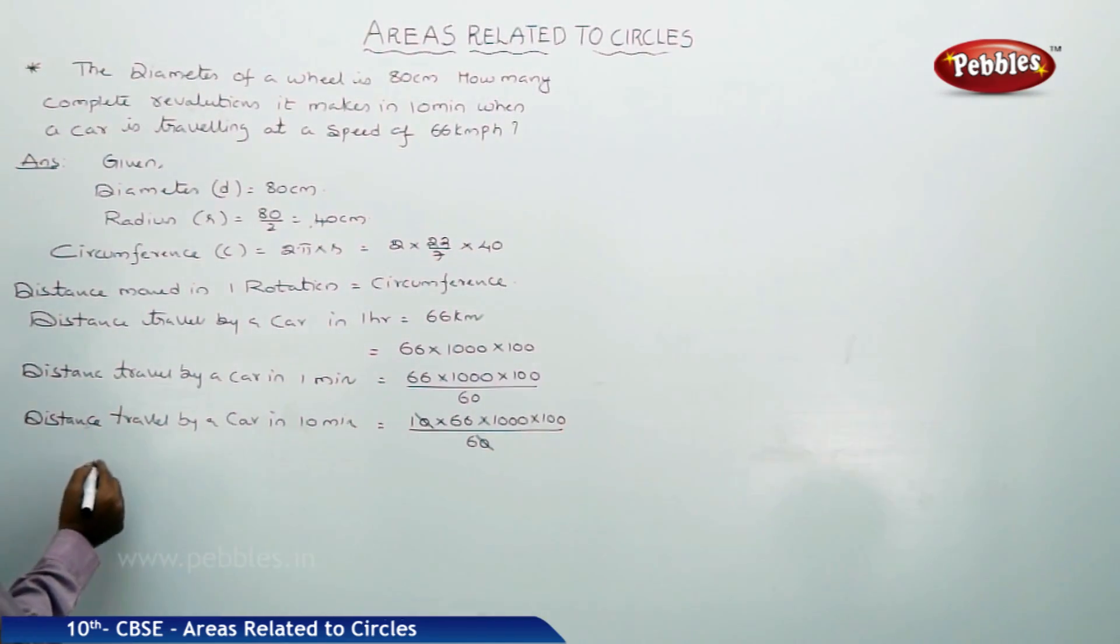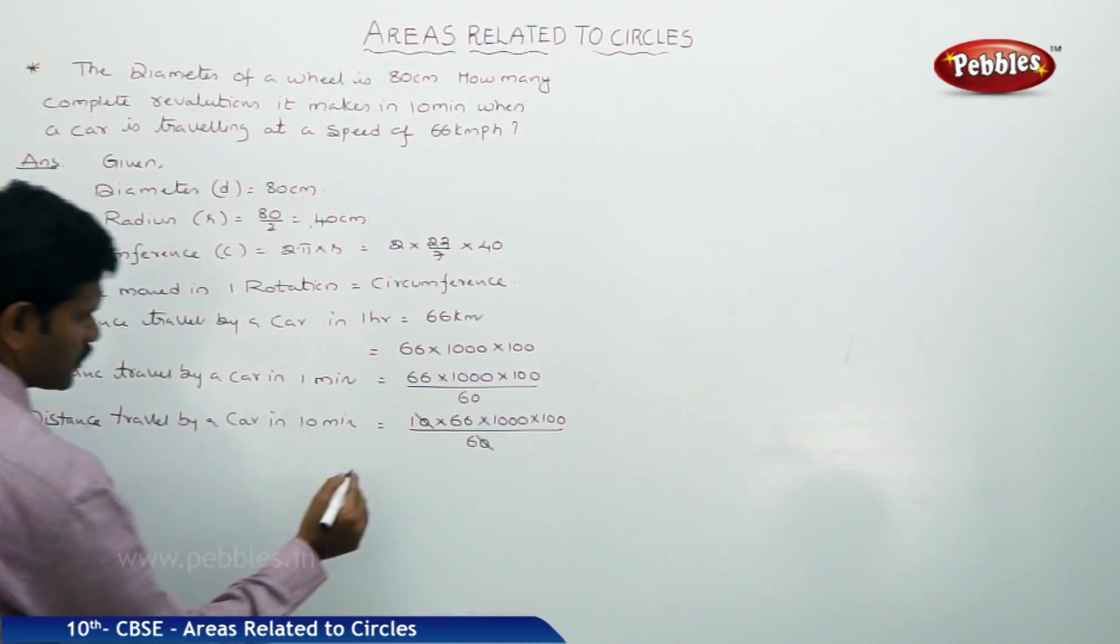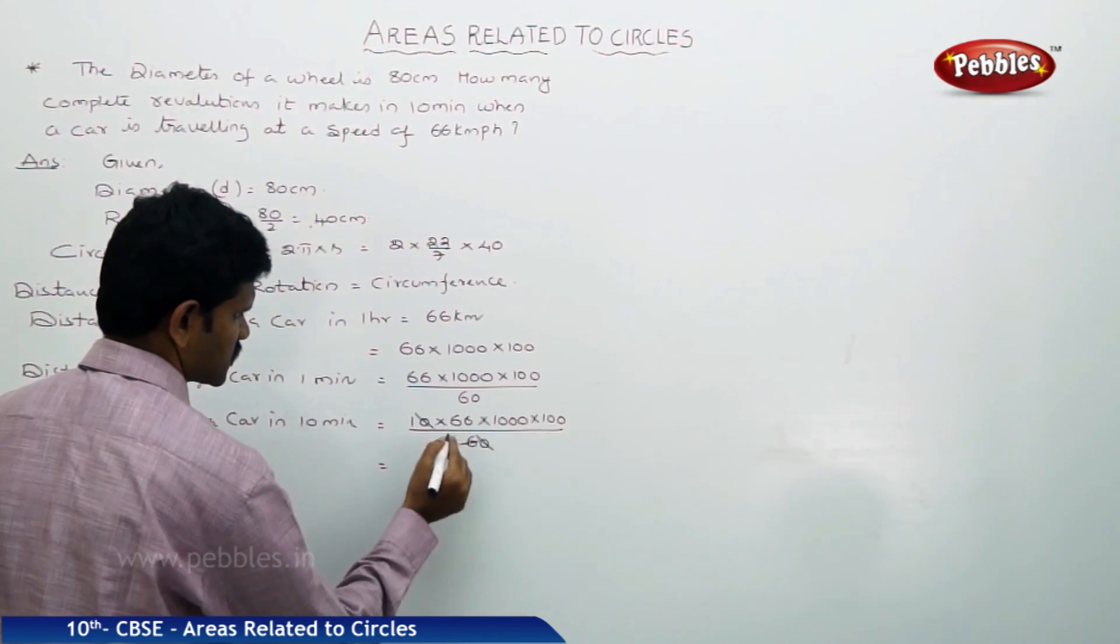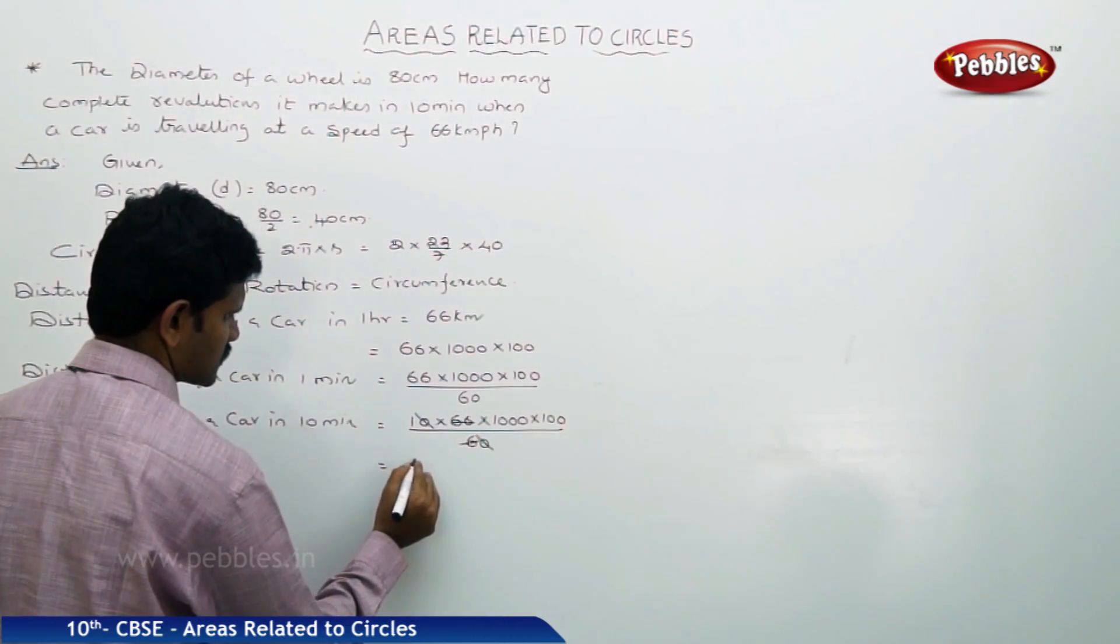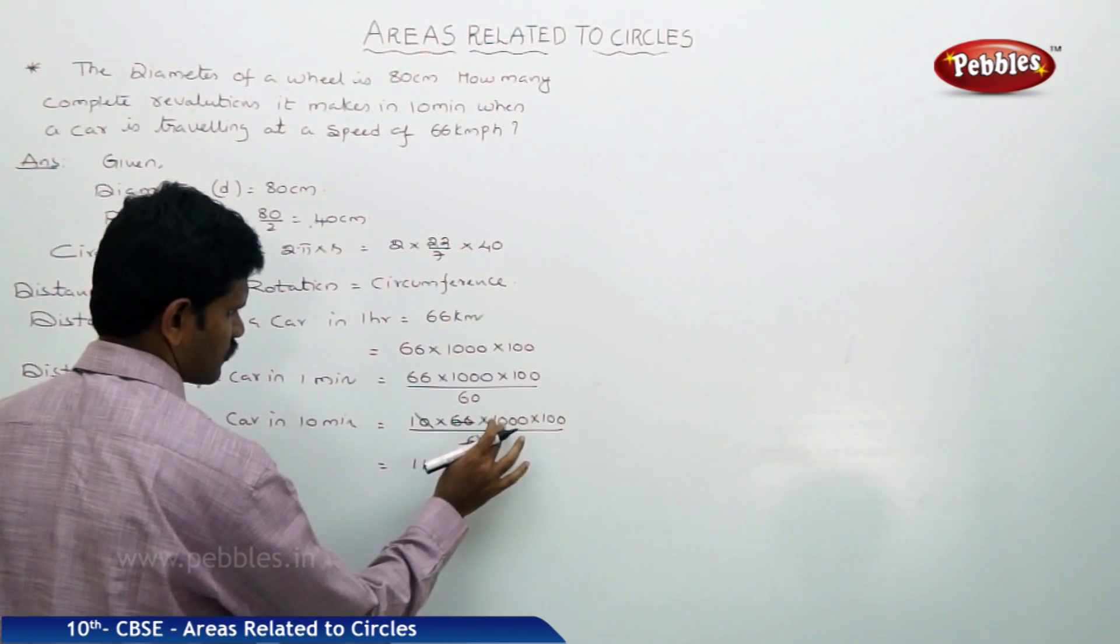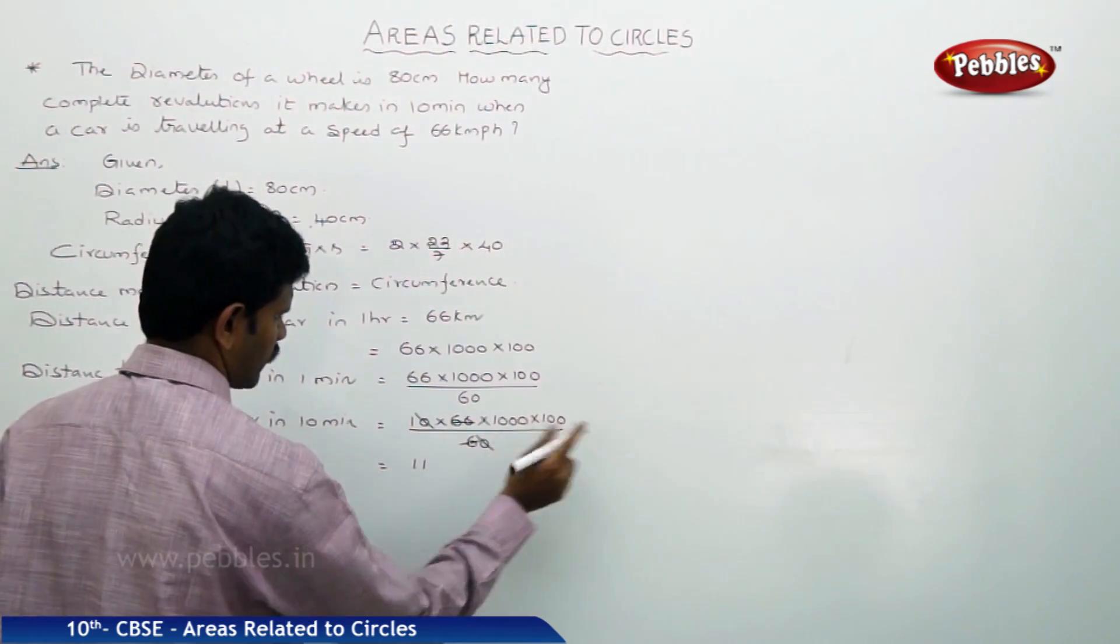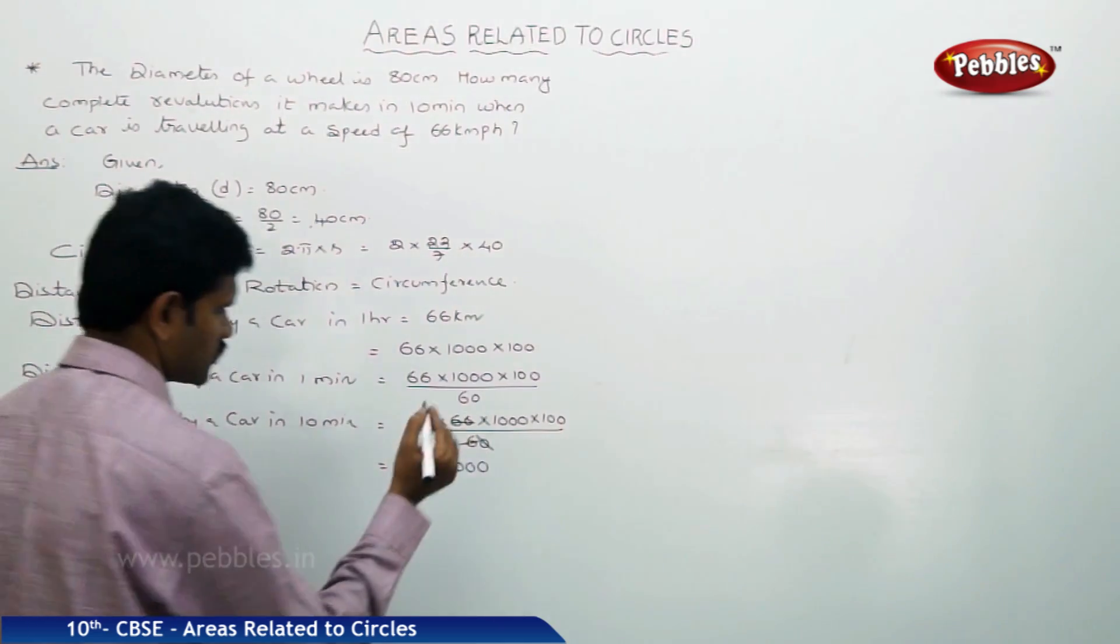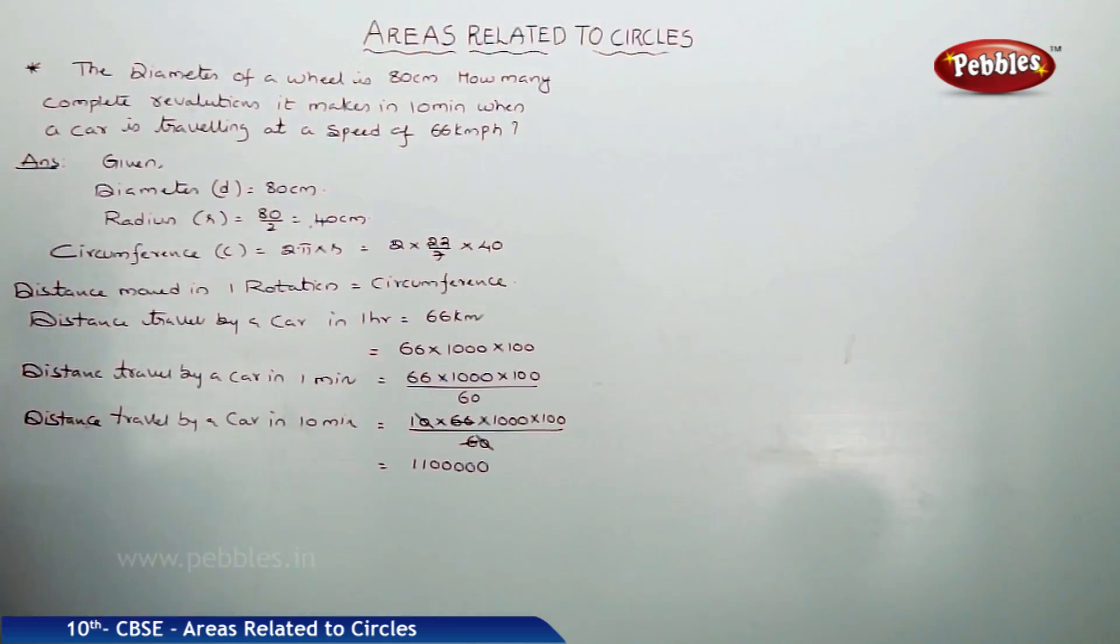60, that is 0, 0, get cancelled. Now, which can be simplified like 66 table, this is 11 times. 11, 1, 2, 3, 4, 5 zeros. 1, 2, 3, 4, 5 zeros. This is centimeters.